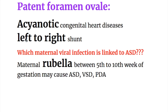There is a left to right shunt in acyanotic congenital heart diseases, which do not cause cyanosis, whereas right to left shunts cause cyanosis. Maternal rubella between the 5th and 10th week of gestation may cause ASD, VSD, and PDA.